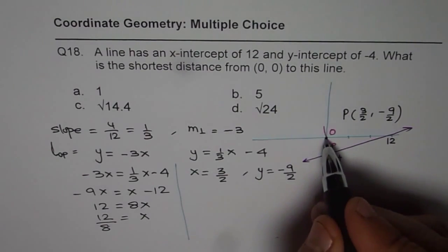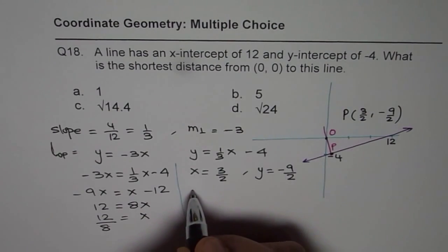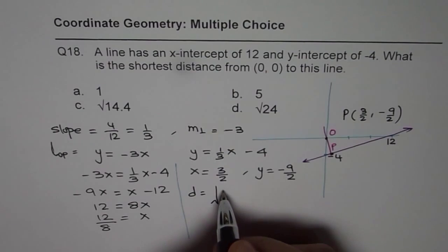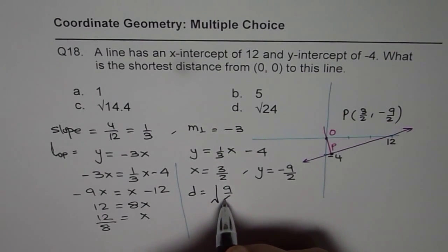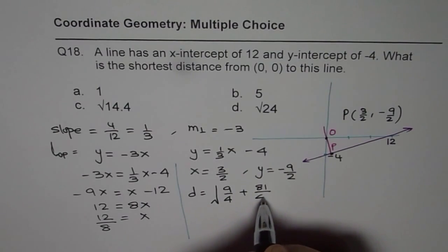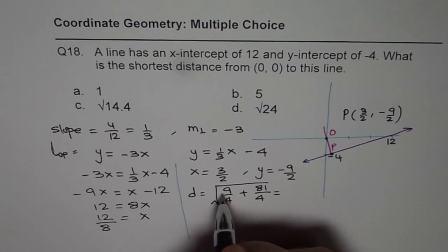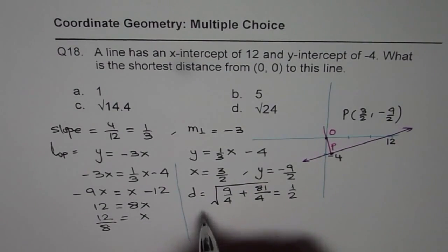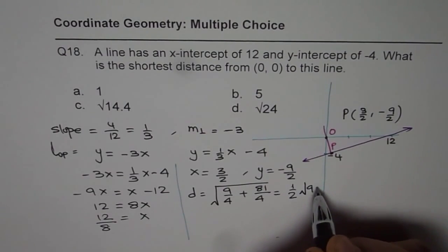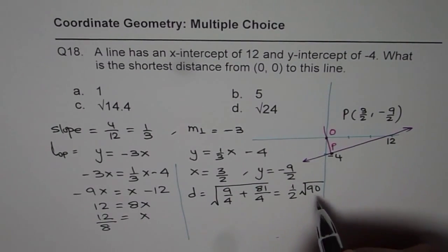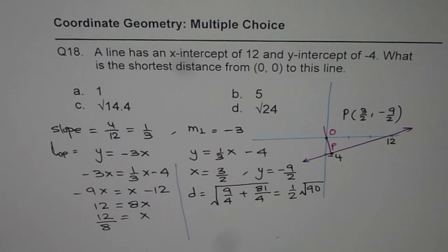Now the distance from the origin will be square root of the square. Square of this will be 9 over 4 plus square of this will be 81 over 4. When you add them up, you can take 1 over 2 outside, and inside the bracket it will be 90 square root.